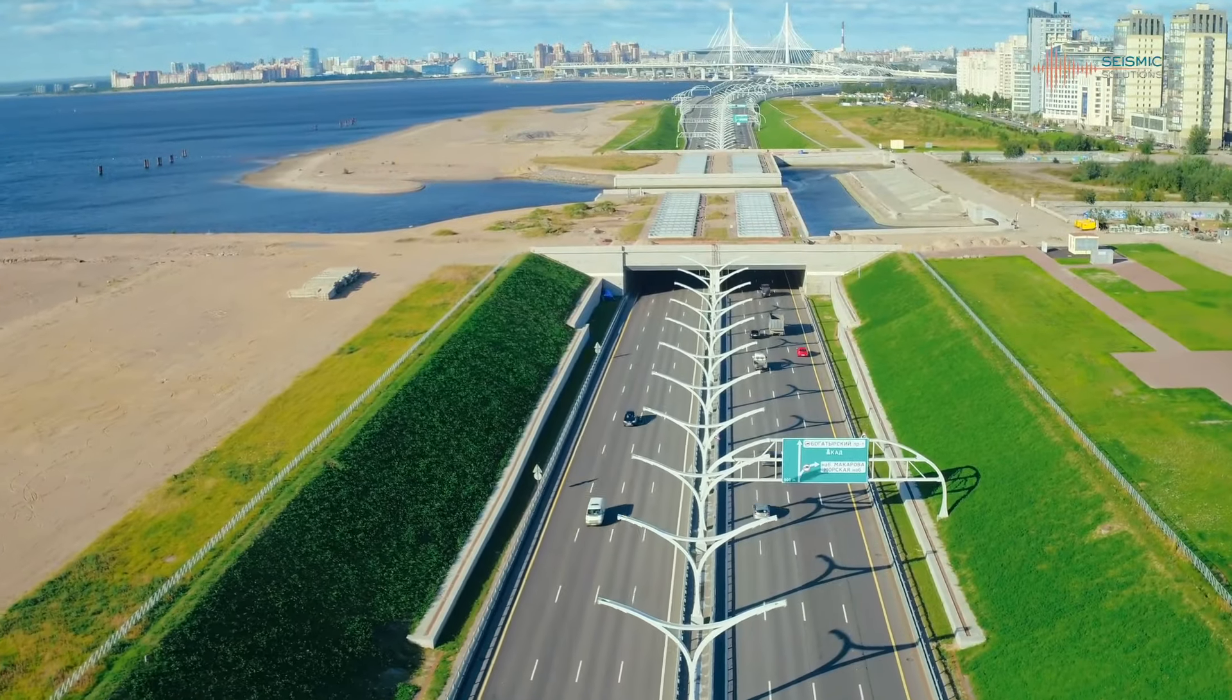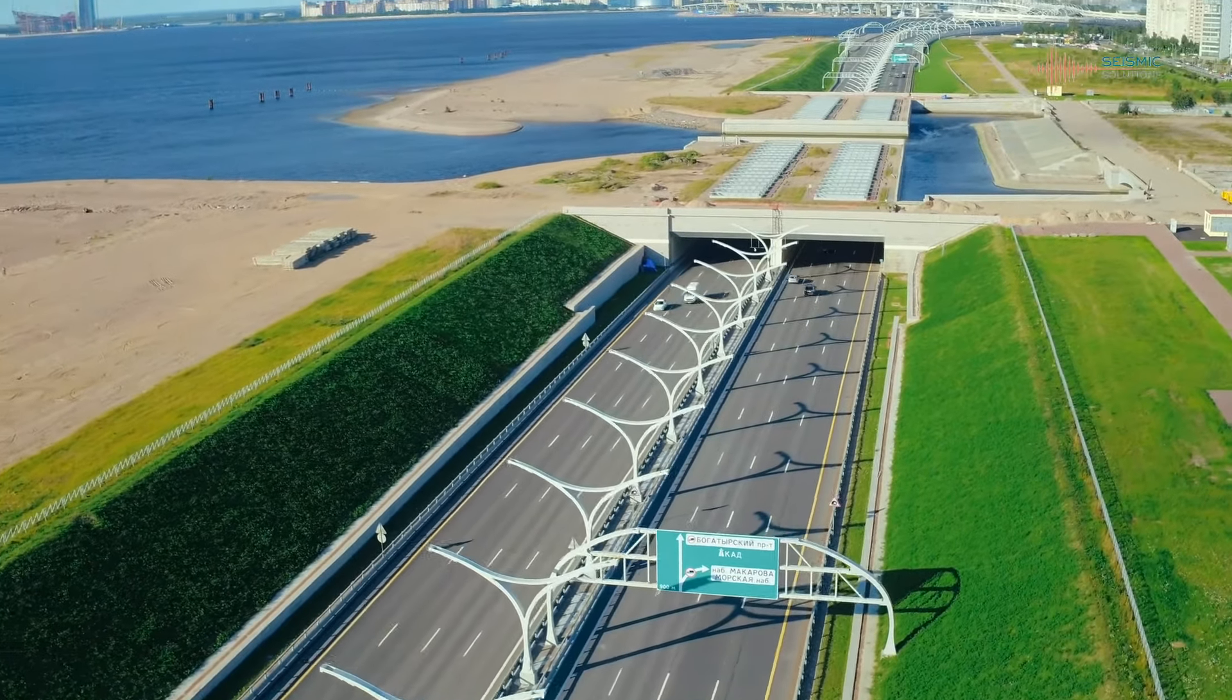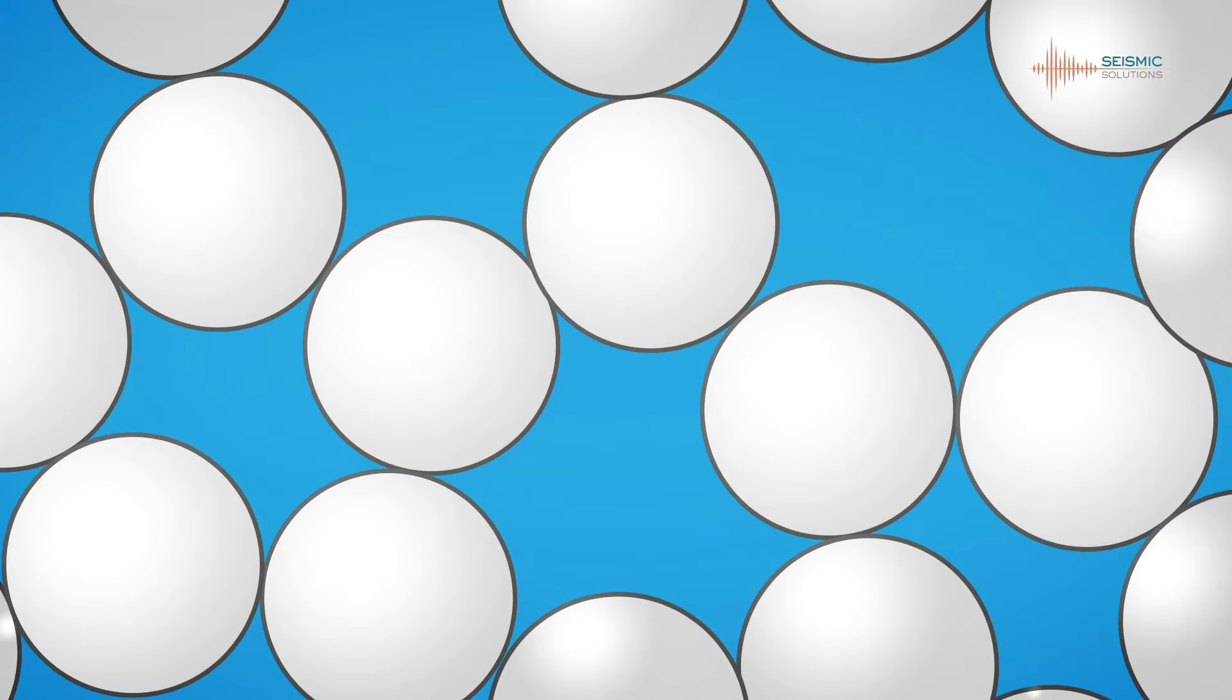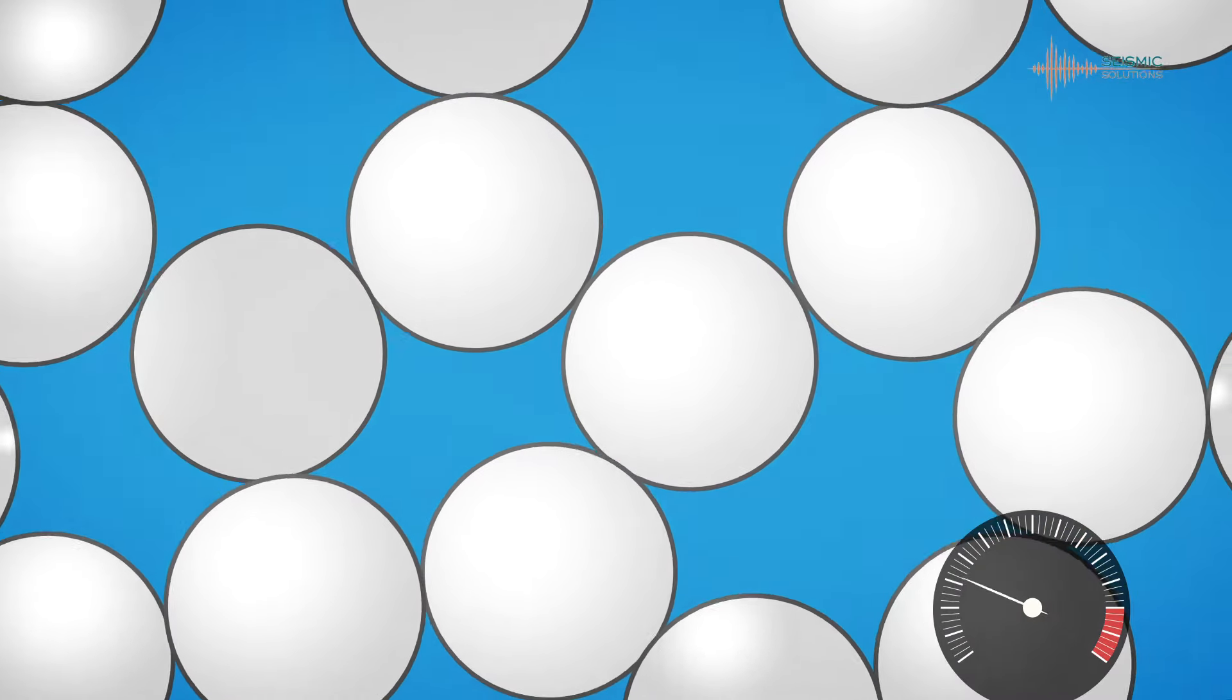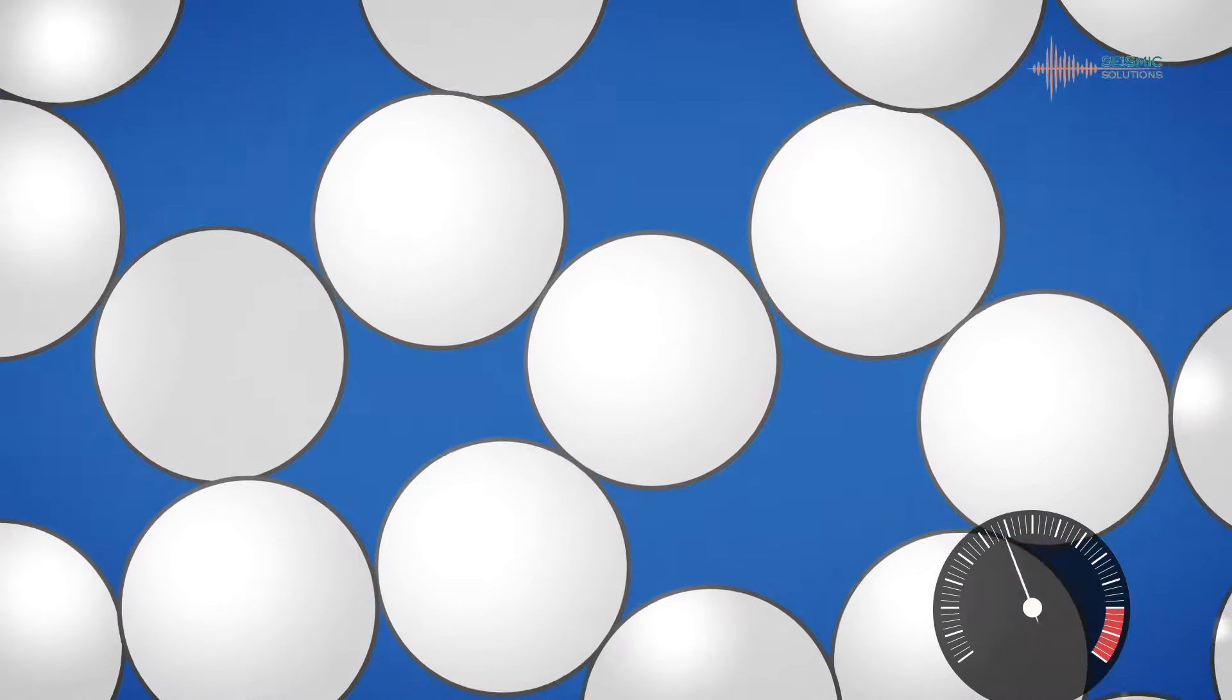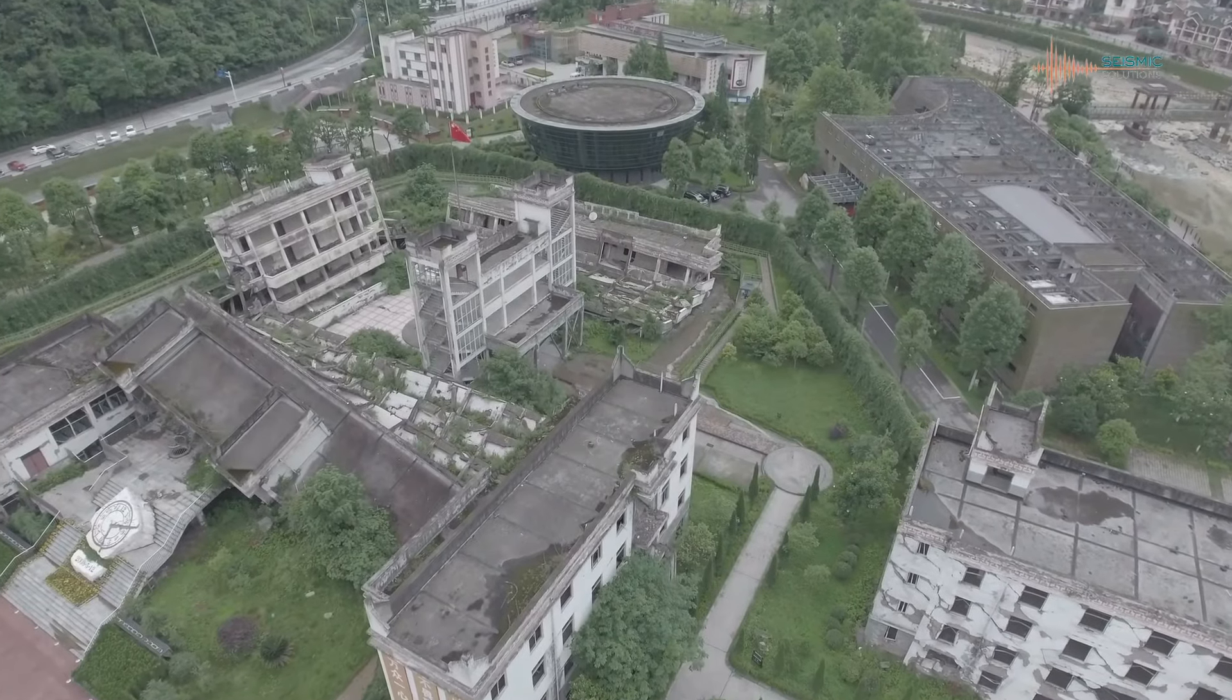However, when loose silts and sands are located below the water table and are saturated, liquefaction can be a concern. Because water is essentially incompressible, any densification of these soils due to a seismic event results in an increase in pressure in the pore water between the soil's grains. When this pore water pressure reaches approximately 60 percent of the soil's strength, loose silts and sands can lose grain to grain contact and liquefy.